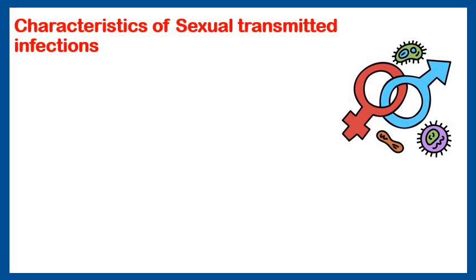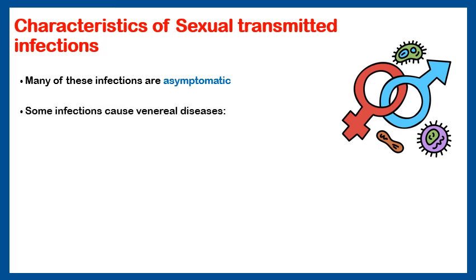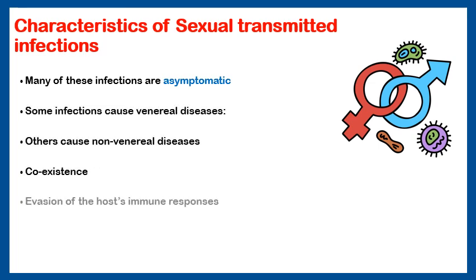The organisms causing sexually transmitted infections can be classified into groups. Certain groups are asymptomatic — so I can't notice any disease, although they are transmitted through fluids from male to female and vice versa. Some infections can cause venereal diseases like gonorrhea and syphilis. Others cause non-venereal diseases — they go out of the genital tract to cause other diseases like HIV.